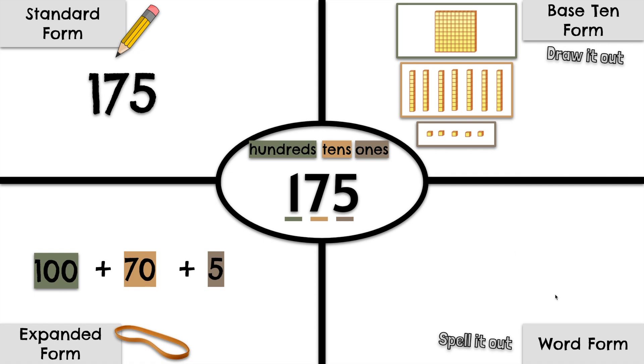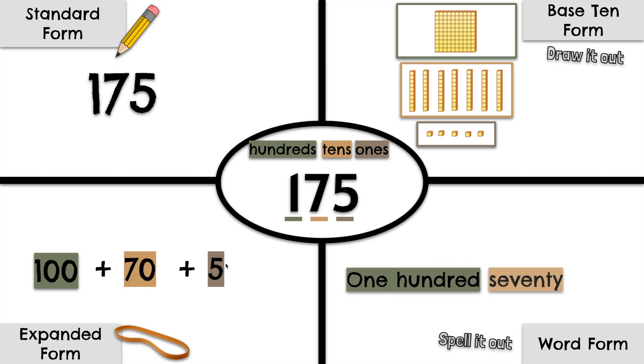Now let's show this number in word form. Let's spell it out. One hundred, seventy, five. Put it together: one hundred seventy-five.